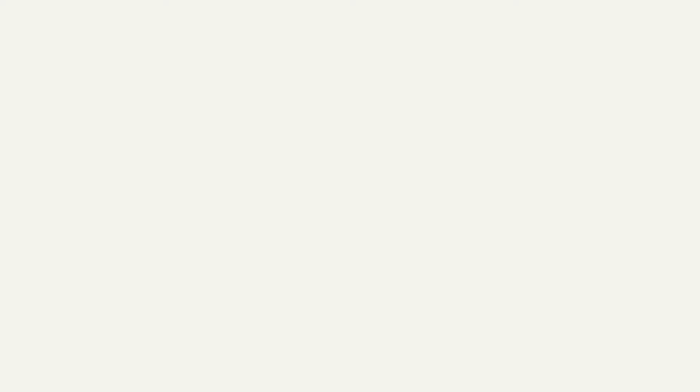Hello and welcome to EU History Explained. In this series, we try to make sense of today's European Union by looking at its history. In the previous episode, we set off on a journey to look at the initial steps on the way towards a European foreign policy, from a series of unsuccessful attempts in the early years to development in the 1970s of certain informal cooperation practices, the so-called European political cooperation. We now continue by investigating how this informal cooperation will lead, over the following years, to today's common foreign and security policy.